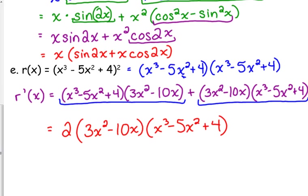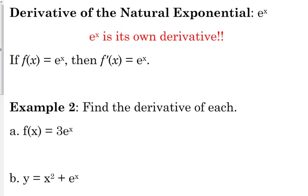This will look familiar when we get to the chain rule — there's actually another way to take the derivative of this function, but we'll get to that in a couple of days. The other thing I want to talk about today is the derivative of the natural exponential, e to the x. There's an interesting thing that happens: e to the x is its own derivative.